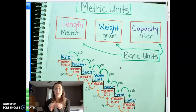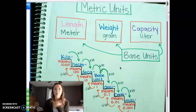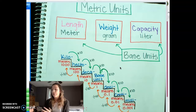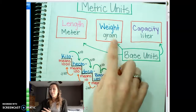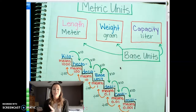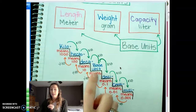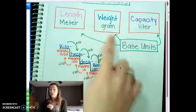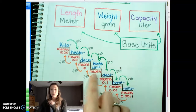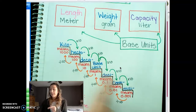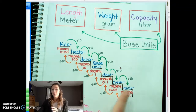In the metric system there are only three base units. In the customary system we had inches, feet, and yards, but in the metric system we only have meters, grams, and liters. On the ladder, you've got kilo, hecto, deca, then your base unit — grams, meters, or liters — and then deci, centi, and milli.